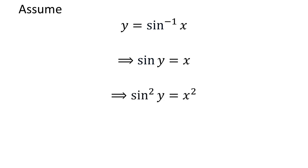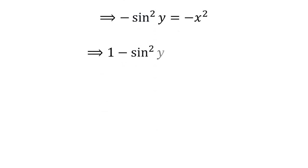Squaring both sides doesn't change the equation, so we get square of sine of y is equal to square of x. Again, multiplying minus 1 to both sides doesn't change the equation, so minus square of sine of y is equal to minus square of x. Similarly, adding 1 to both sides gives us 1 minus square of sine of y is equal to 1 minus square of x.